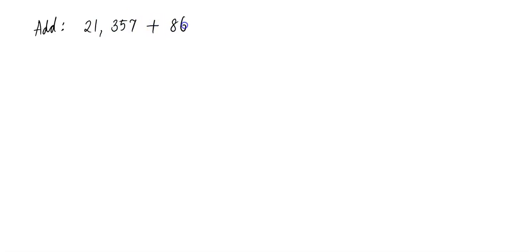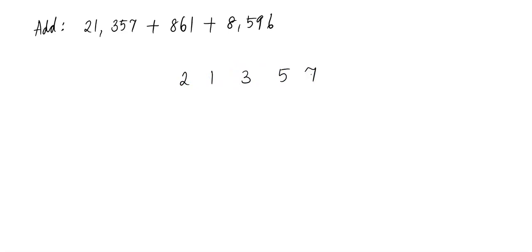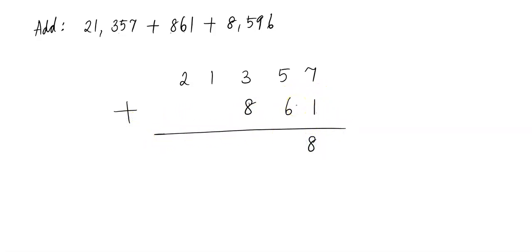Now, how would we add three numbers? Let's start with the problem: 21,357 plus 861 plus 8,596. When you have three of them, do them two at a time. Line them up vertically. Commutative property allows you to choose any two numbers first. So 21,357 and 861: 7 plus 1 is 8. 6 plus 5 is 11 — carry over the 1. 8 plus 1 is 9, 9 plus 3 is 12 — carry over the 1. 1 plus 1 is 2. Don't put any comma yet because you have one more number to add.